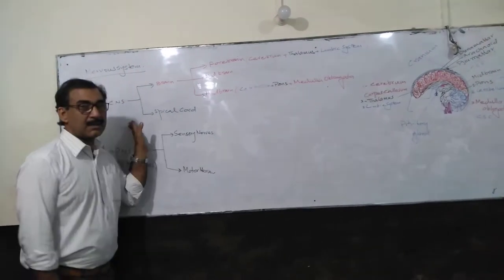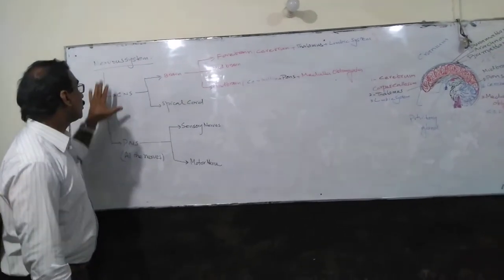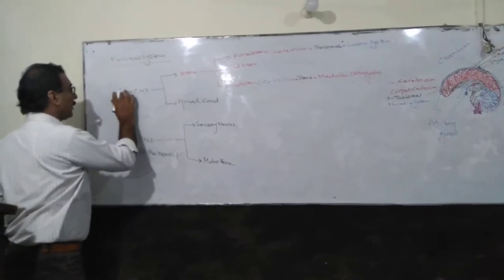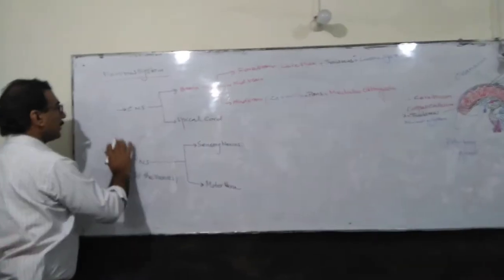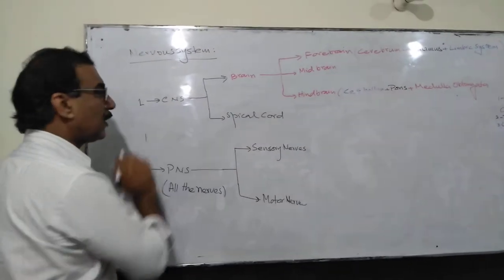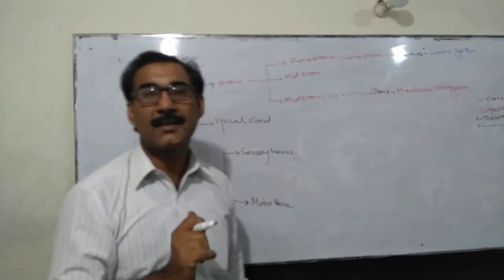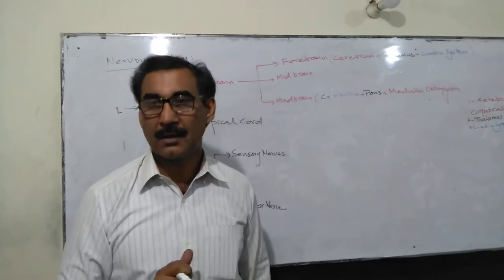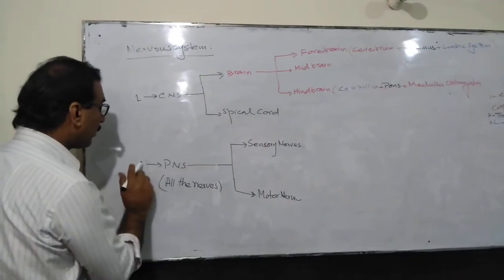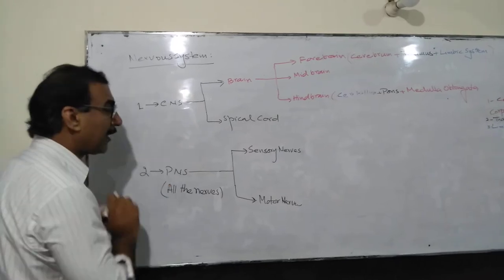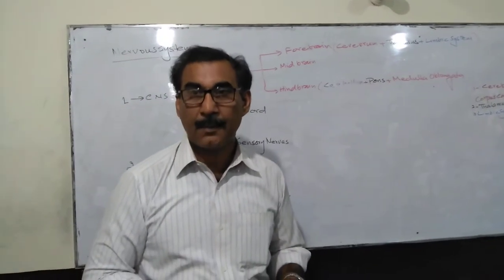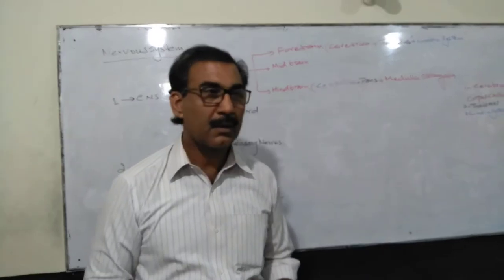The human nervous system consists of two major parts. The first part is the CNS — the Central Nervous System. And the second part is the PNS — the Peripheral Nervous System.